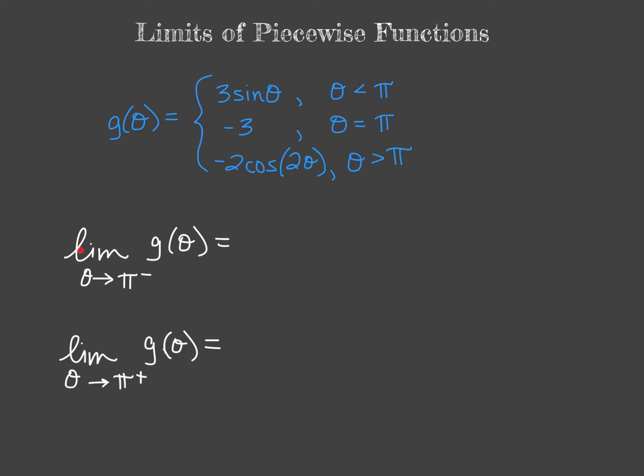We want to find the limit as theta approaches pi from the left of g of theta. If we take a look here, where would we want to plug it in, right? This piecewise function has three different pieces and their breaking point is at theta equals pi. Now theta is just our x value. Pi is the specific number that we're focused on. So approaching pi from the left, that means less than pi. That means we need to look up here. So we're going to plug in pi for our function up here, this top part.